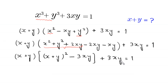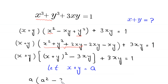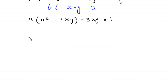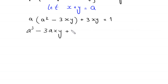Now we suppose that x plus y is equal to a. So this becomes a times a squared minus 3xy plus 3xy equals 1. Expanding: a cubed minus 3axy plus 3xy equals 1.